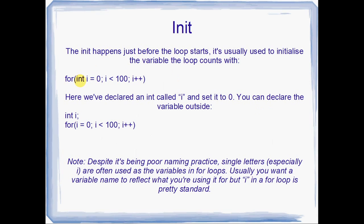The init is the first part, and that happens before the actual loop starts executing, and that's usually used to set up the variable that you're going to count with. Right here I've got for int i equals zero, and that just declares a variable called i and sets it to zero. You can declare the variable outside your for loop. Despite it being poor naming convention, it's pretty common to call a for loop's counter something like i or j, single letters. You can call it counter or be descriptive if you like, but it's common to use single letters.